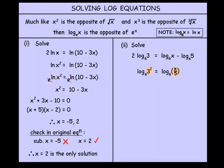So therefore, 9 on the left, which is 3 squared, is equal to, on the right, x over 5. And simplifying that, just multiply both sides by 5. Therefore x equals 45.